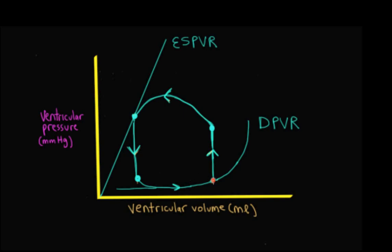Starting with preload: if the end diastolic pressure-volume point moves up along the diastolic pressure-volume relationship, that represents an increase in preload. If that point moves down the DPVR, the preload has gone down. Preload represents the wall stress in the ventricle at the end of diastole — the end of filling.